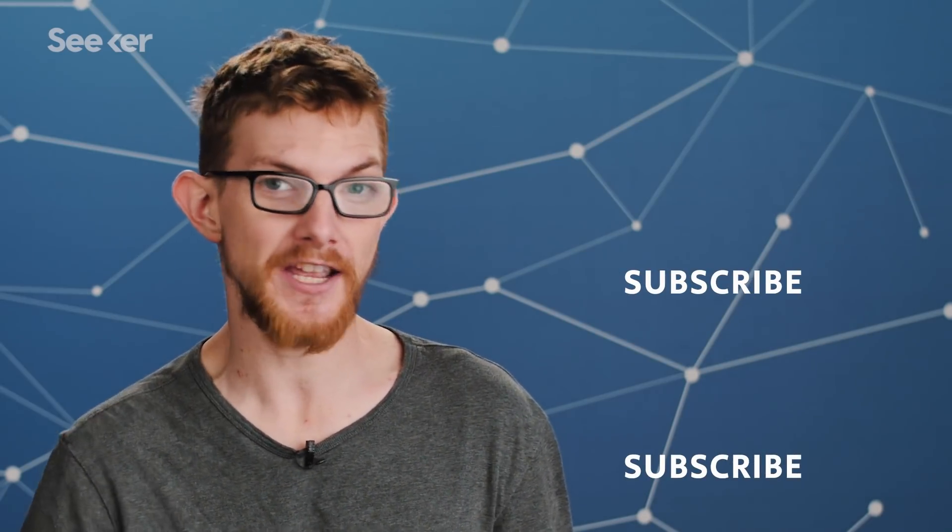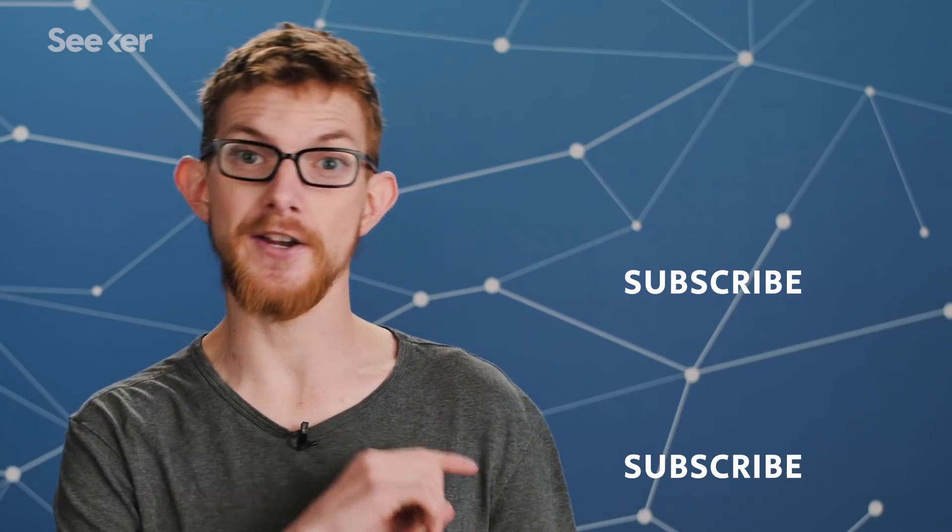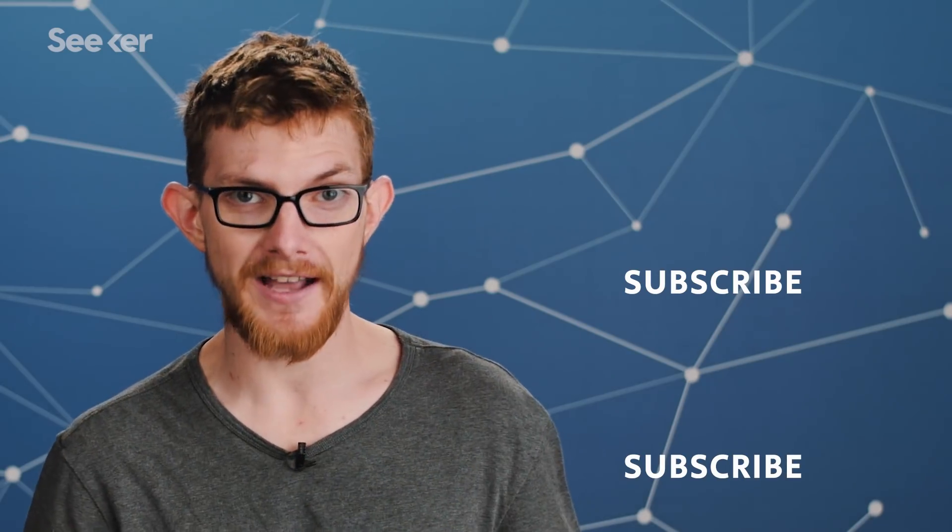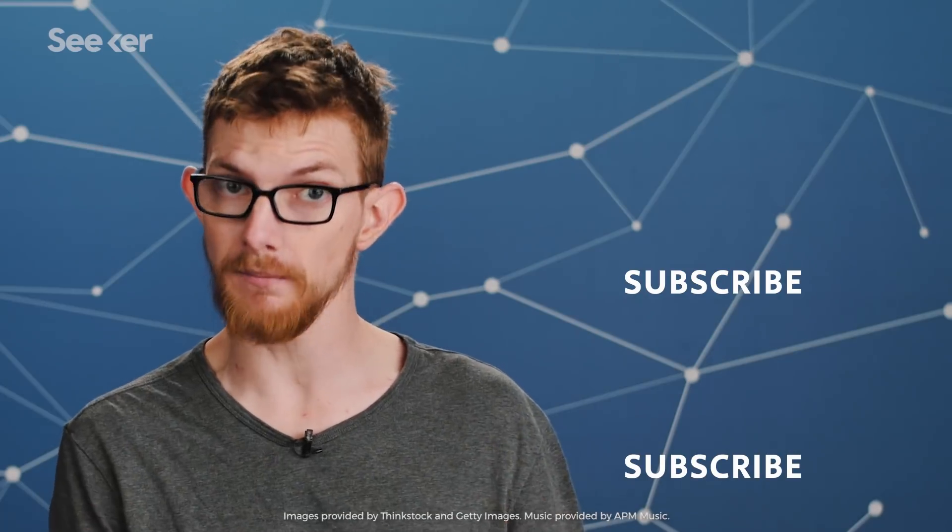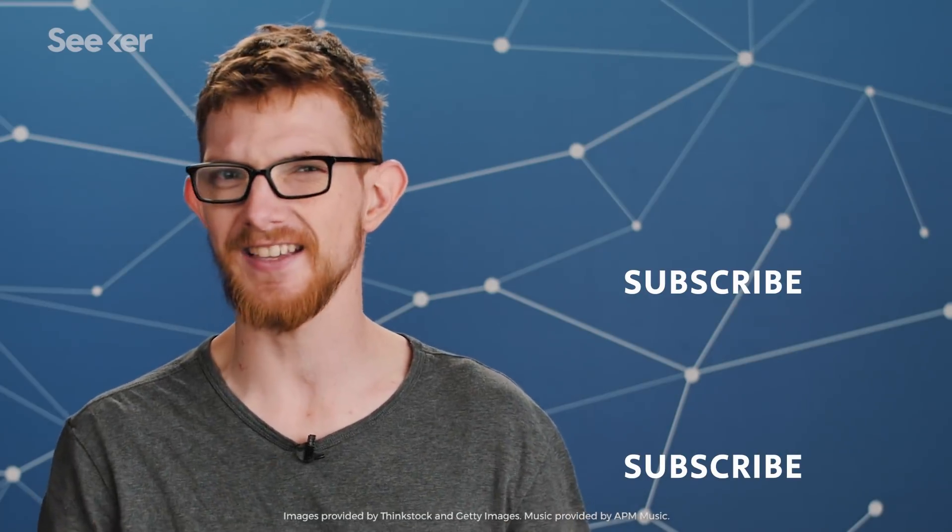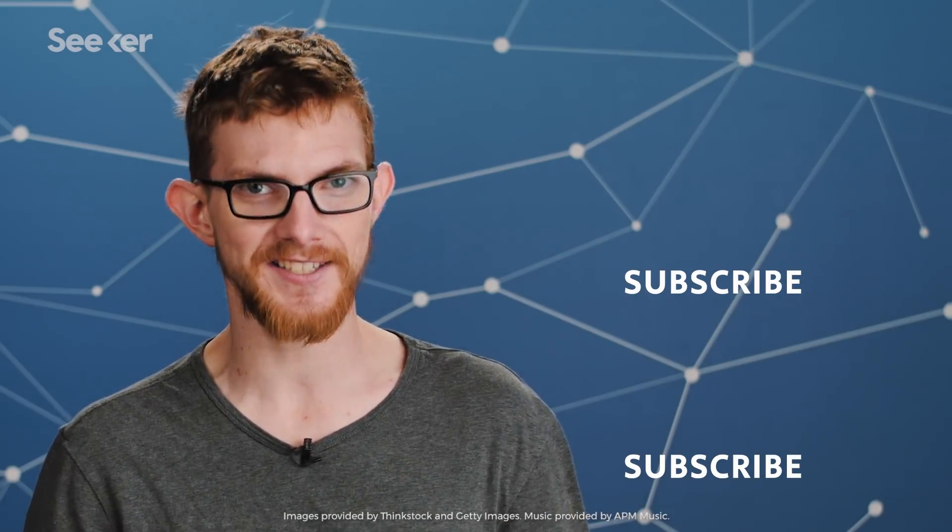We keep coming up with new ways to look for dark matter like with black holes and gravitational waves. Check out the deets here. By the way, when we say baryonic matter technically electrons don't count because they're leptons, but astronomers lump them in with protons and neutrons to make things simpler. Thanks for watching, I'll see you next time on Seeker.